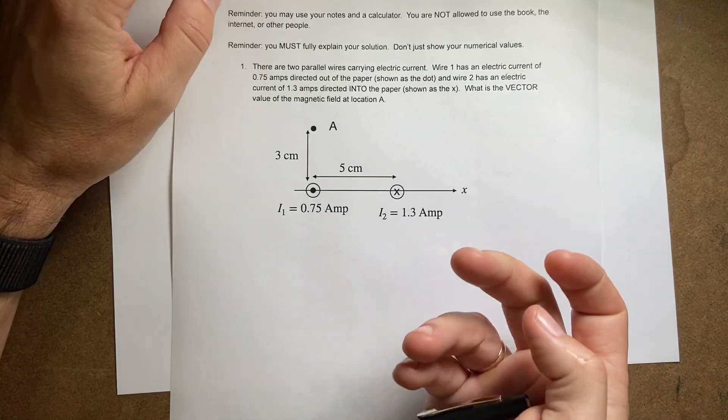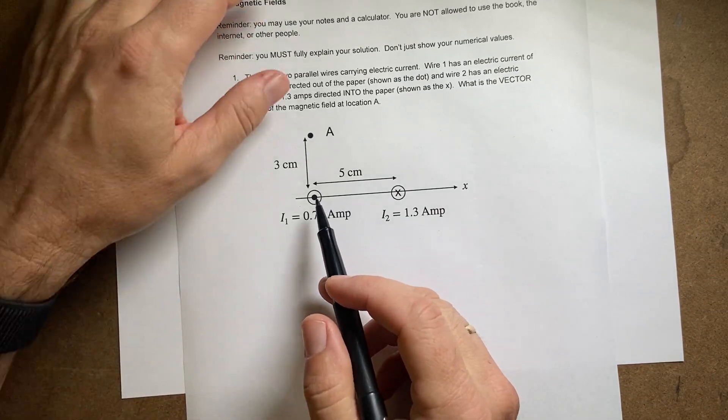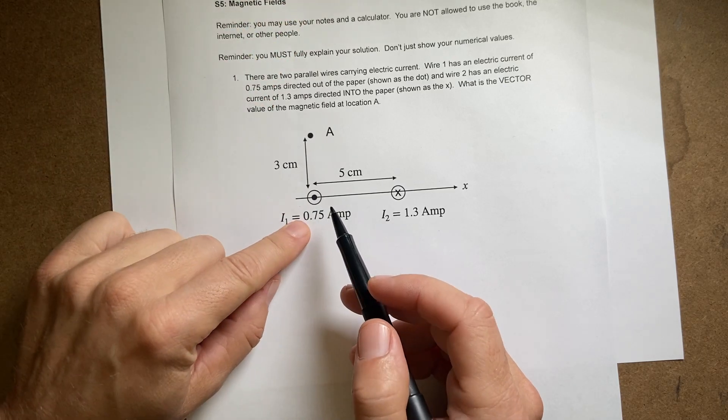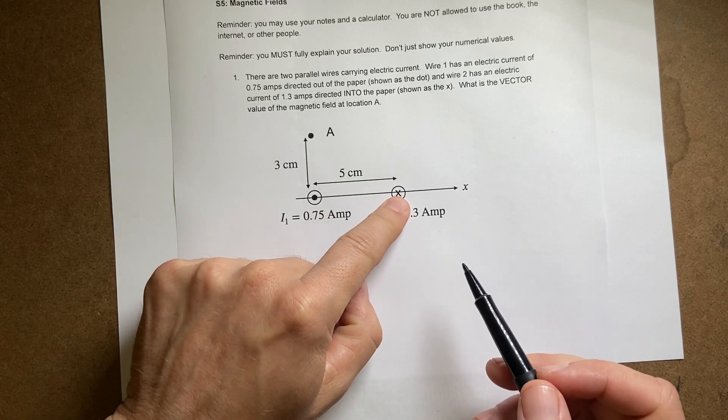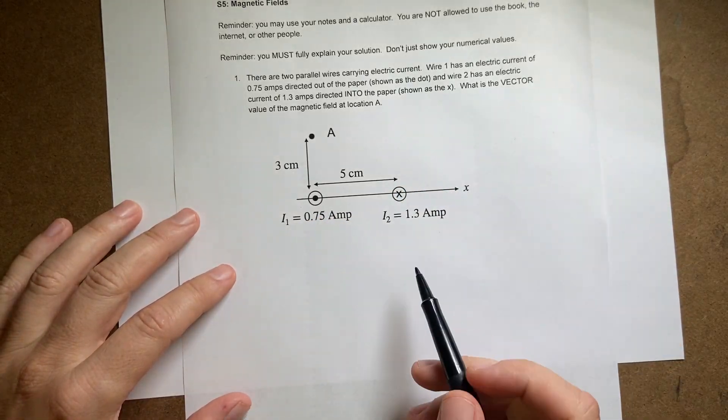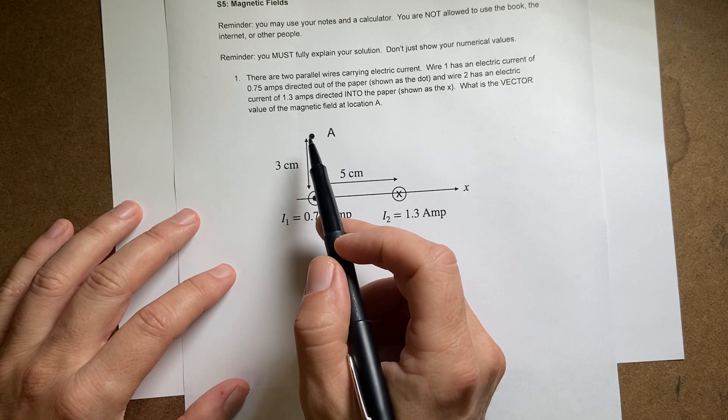Here I have two wires carrying electric current. This one has a current coming out at 0.75 amps and this has a current going in with 1.3 amps. I want to find the vector magnetic field right here.